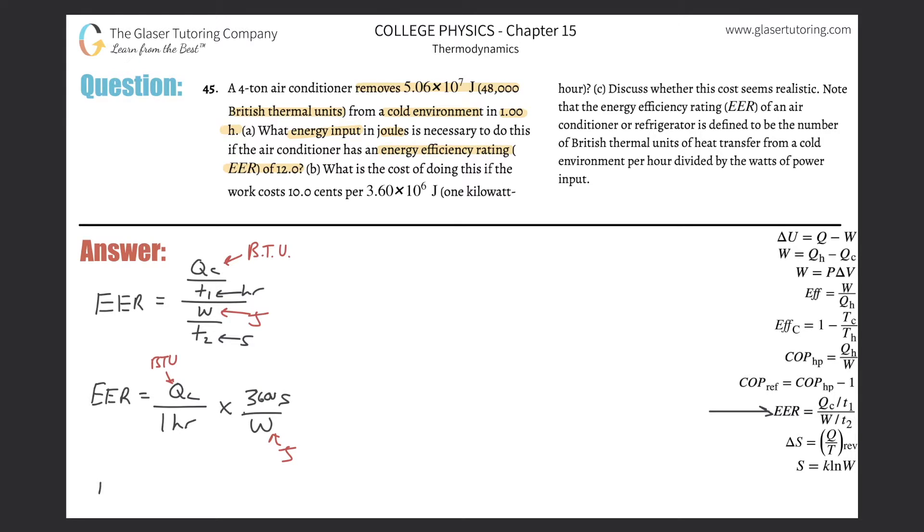So, what I can do is this. I can now have this new formula that says it's going to be Q sub C over time in hours multiplied then by 3,600, divided by then the work. Now, if I recombine this, if I want to recombine it,